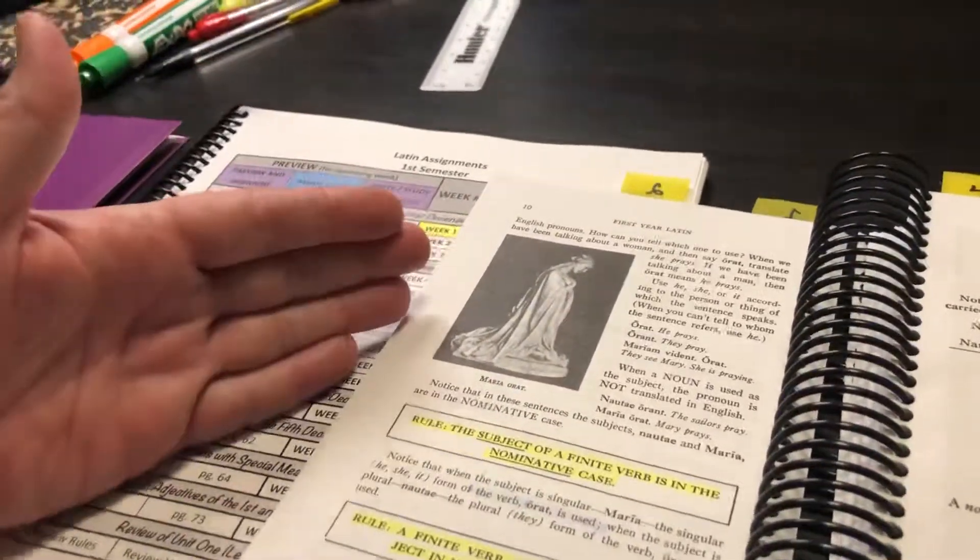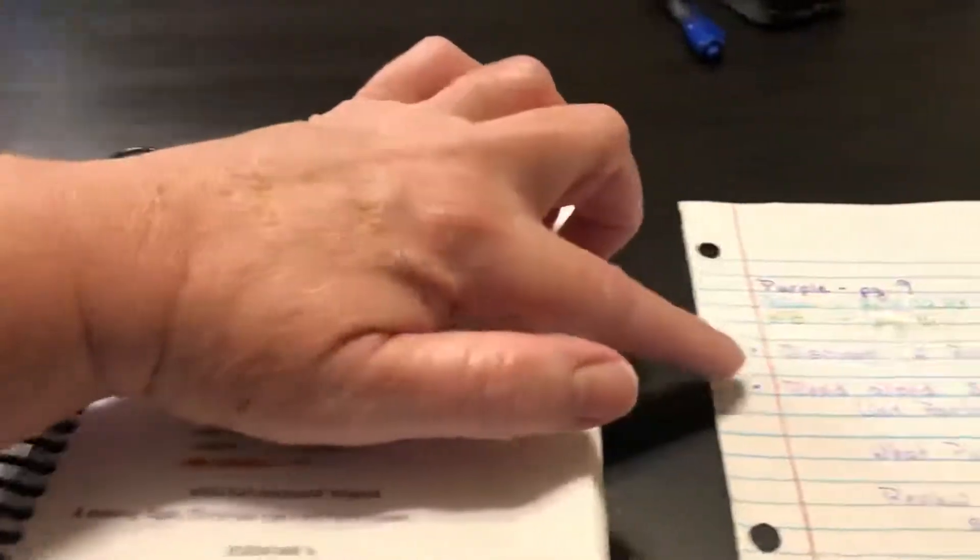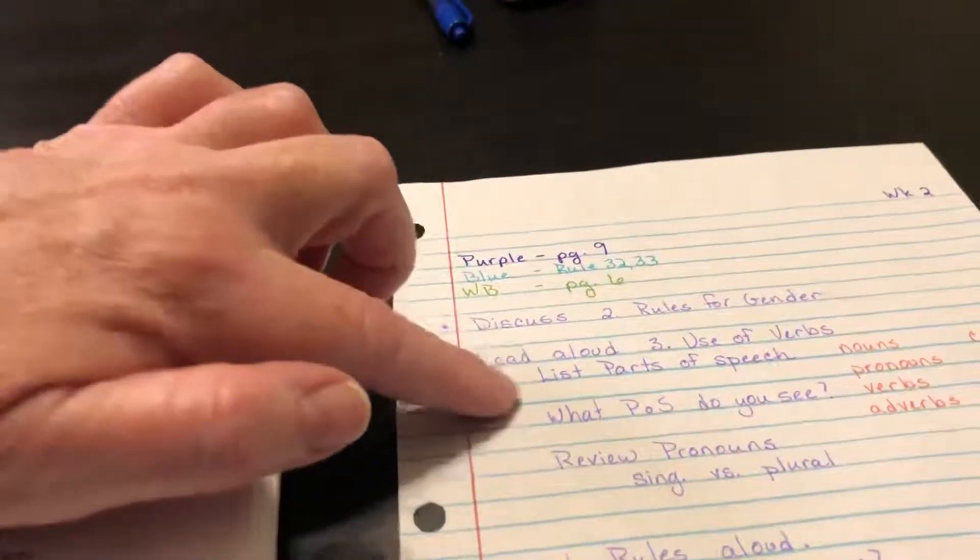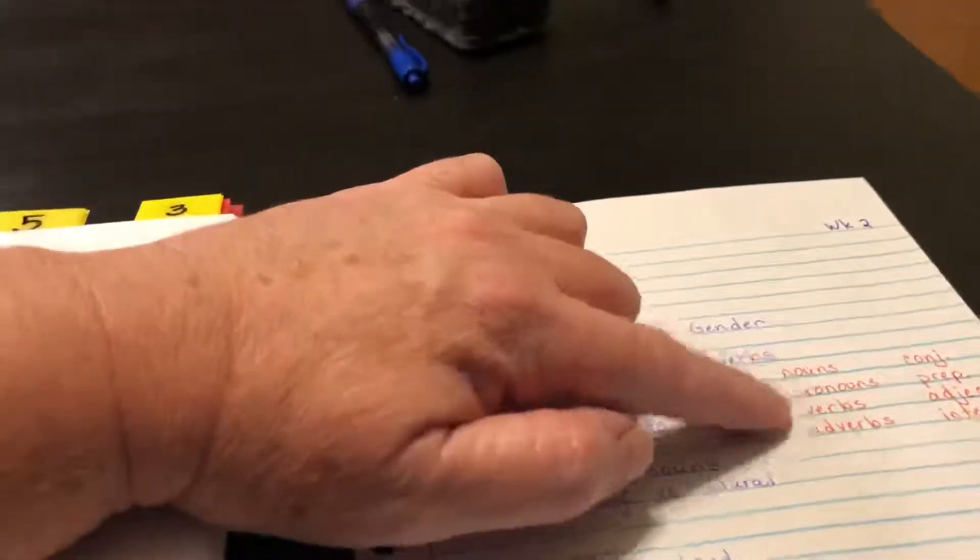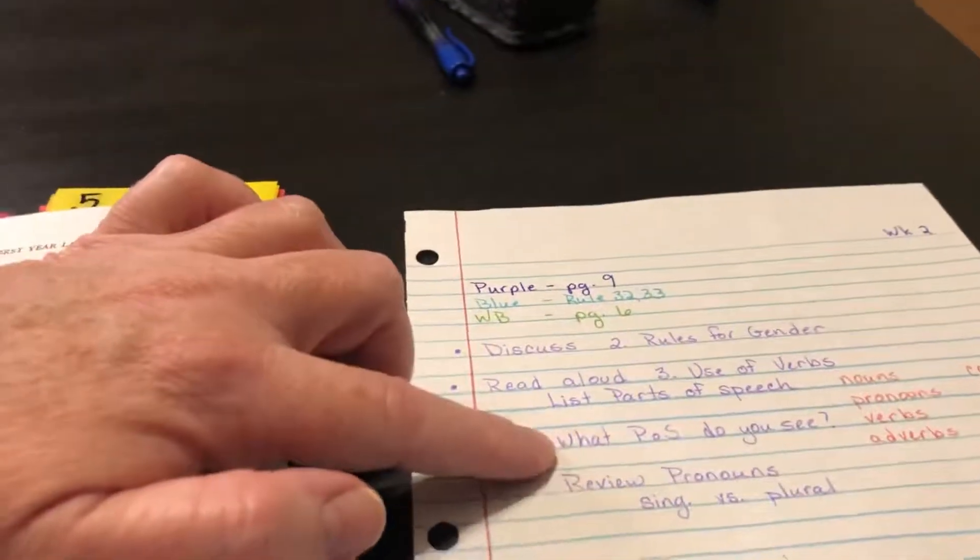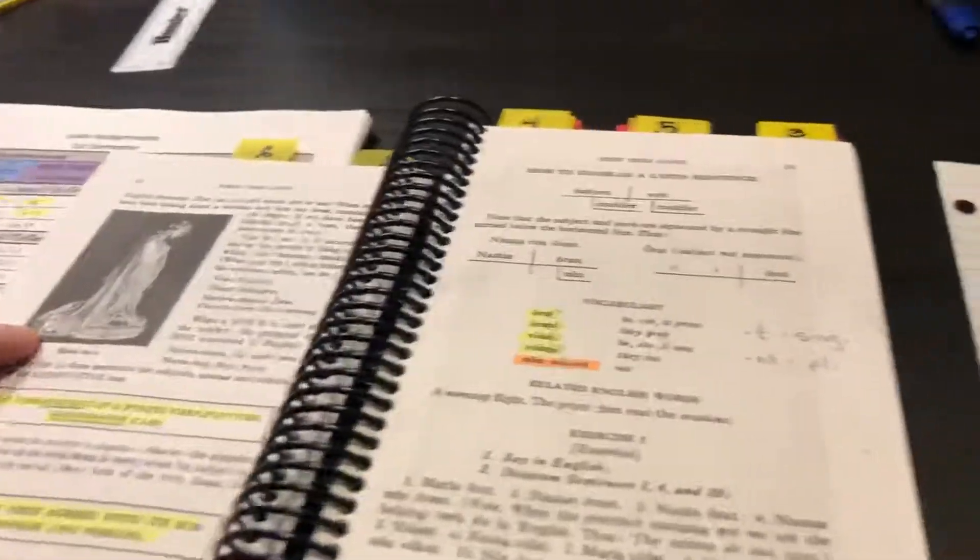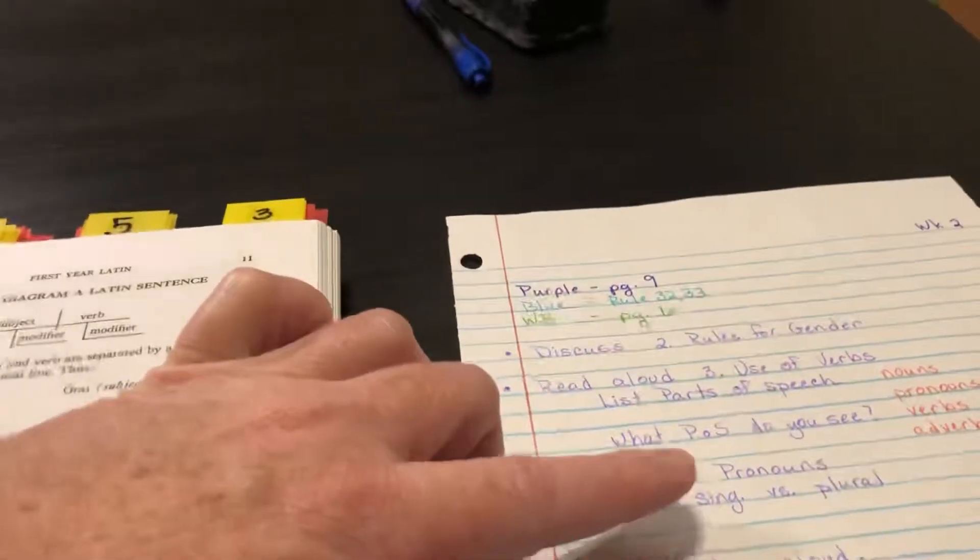It's not something that's going to come right away. We're going to practice it. But anyway, so over here I made my notes. I believe we were going to read aloud that use of verb section. We're going to talk about the different parts of speech, see if they remember their memory work—what parts of speech do we see in this section? And that would be verbs and pronouns.